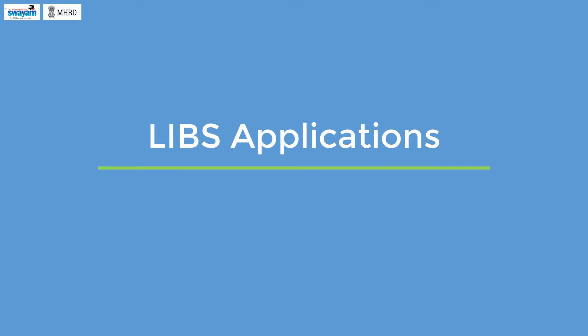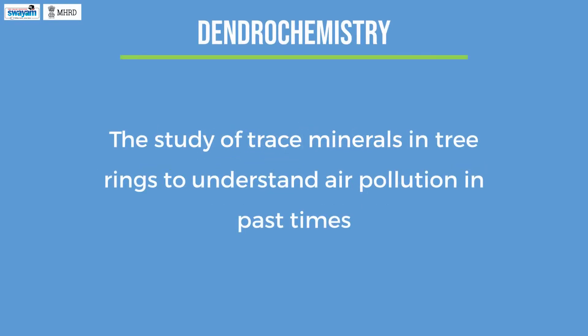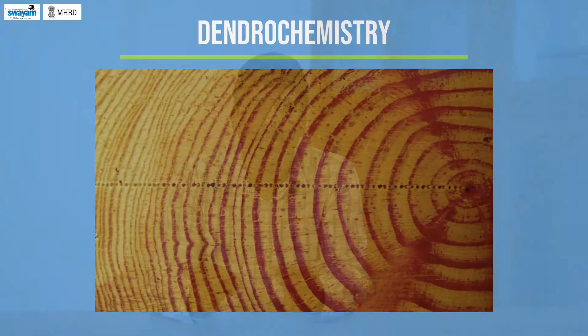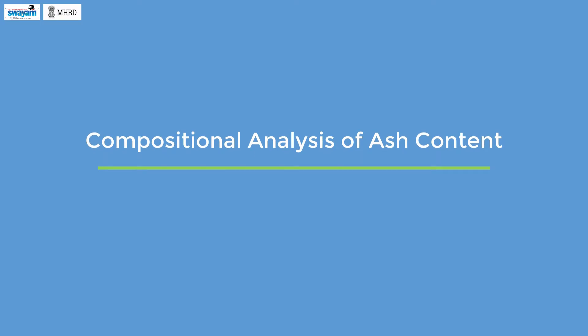Applications of LIBS: Dendrochemistry is the study of trace minerals in tree rings to understand air pollution in past times. LIBS has been used successfully for estimating elements present in each ring. This is a photograph of tree rings taken just after LIBS analysis. By pointing the laser exactly onto the tree rings, we can get information about elements in each ring and interrelate this information to air pollution in the past.